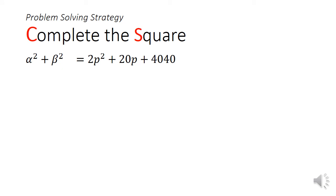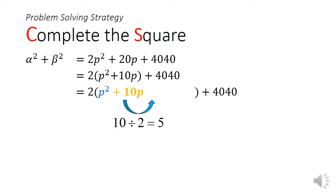From the general form, we can now proceed with the process of completing the square. Now, I'm going to show you a different method. What you first do is you factorize the coefficient of 2 from the p square and the p term. Next, we take the coefficient of the p term and we're going to half it.